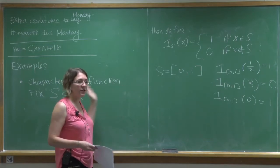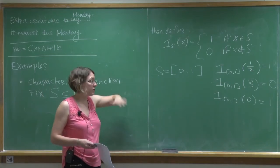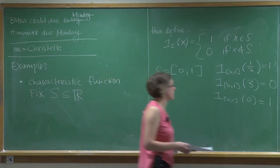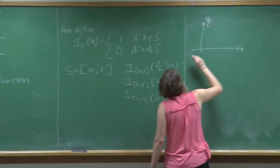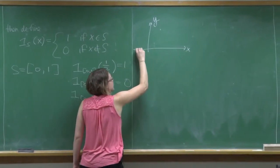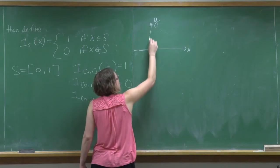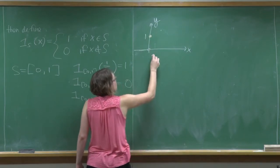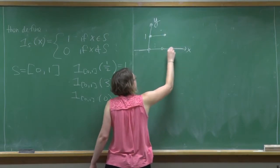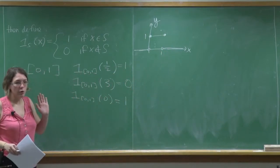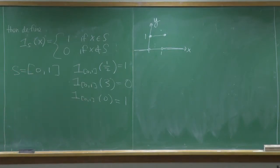This is used in analysis: if you want to integrate only over a little region, you can still write an integral from minus infinity to infinity by putting in a characteristic function, because it zeroes out your function when you're outside the set. On a graph, the function is zero, then at zero it jumps up to 1, stays 1 across [0,1], then jumps back down to zero.